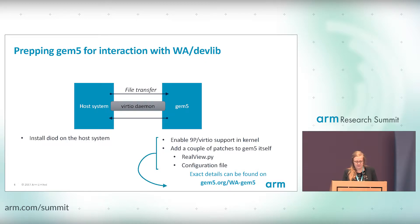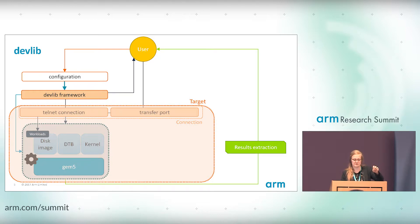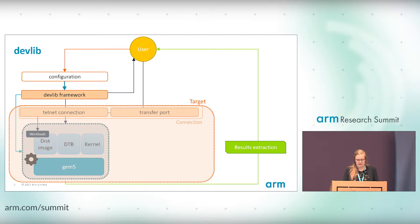How DevLib works: as a user, you create a configuration in Python, and then the DevLib framework looks at what is in that configuration and sets up a GEM5 simulated system for you. It will start the simulation and then try to hook into it. From that moment on, you can interact with GEM5 using what is seen as a generalized connection — but on the inside it's a telnet connection. There's also a transport port in the connection, which allows you to push workloads onto GEM5 at runtime. This altogether is called, in DevLib terminology, the target.